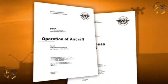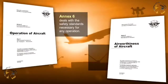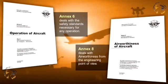The airworthiness of aeroplanes is therefore not just fully defined by the application of the standards of Annex 8, but also the standards of Annex 6, which are complementary. Annex 8 deals with the engineering aspects, whereas Annex 6 deals with the safety of the operation of the aircraft. The standards apply to performance and operation.